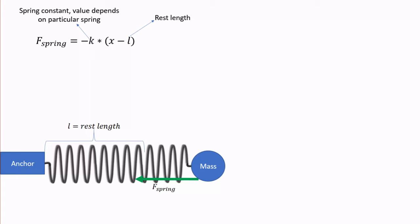That k is called the spring constant, and it depends on the spring itself. Each spring might have its own constant. Some springs might be very hard to compress or stretch, which means that those springs have a high k constant. Other springs might be very easy to stretch or compress, and that means that they have a low k constant.